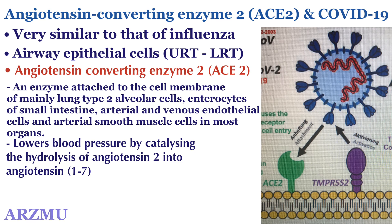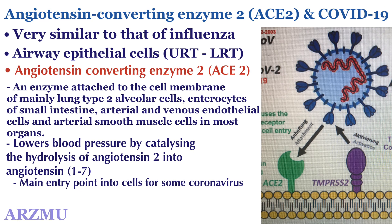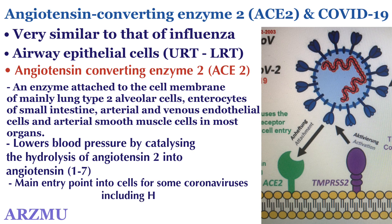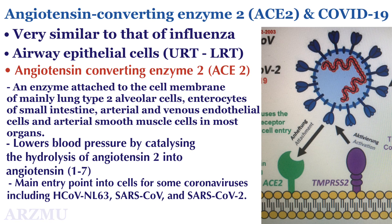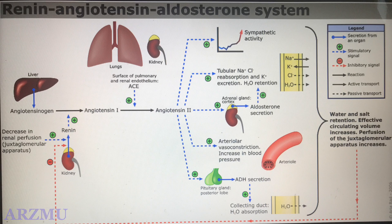ACE2 lowers blood pressure by catalyzing the hydrolysis of angiotensin 2 into angiotensin 1-7. As angiotensin 2 is a vasoconstrictor, ACE2 is the entry point into cells for some coronaviruses, including human coronavirus NL63, SARS coronavirus, and SARS coronavirus 2.